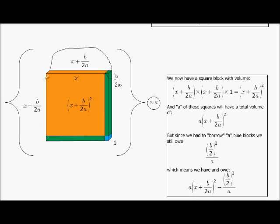The height is the same thing, and the width is still 1. So that is why length times height times width gives us a perfect square. And we don't just have one of them — we have a of them. So in total, I've got a of these perfect squares.